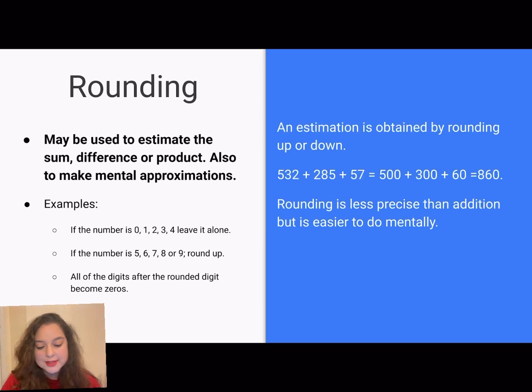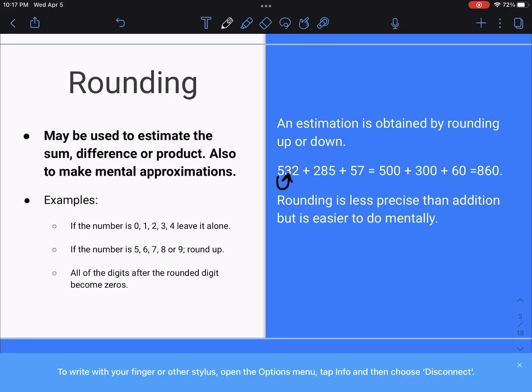Rounding may be used to estimate the sum, difference, or product and it's also used to make mental approximations. If the number is 0, 1, 2, 3, 4 you would leave it alone, but if that number is 5, 6, 7, 8, or 9 you would round it up and all of the digits after that would turn to 0. So let's do another example. 532 plus 285 plus 57. Looking at 532, the second digit is a 3 which is below 5, so we round down to 500. For 285, we look at that 8 which is over 5, that gives us 300. And 57, we look at that 7 which is also over 5, so we round up to 60. Now you can do your quick math: 500 plus 300 plus 60 is 860. Rounding is less precise than doing all of the addition, but it is easier to do mentally.